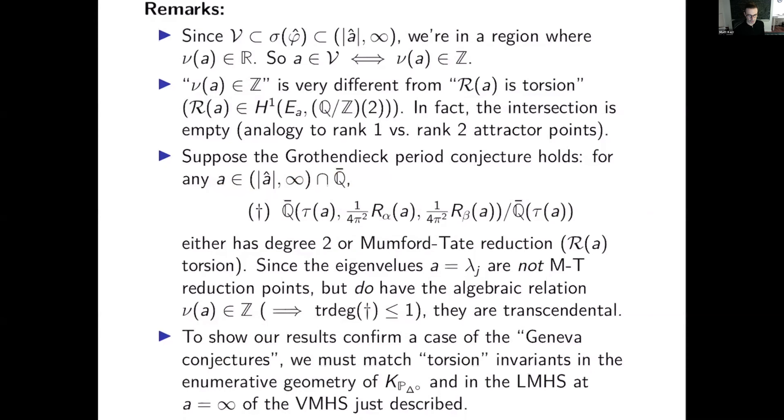Since the eigenvalues on the other hand a equals lambda j are not Mumford-Tate reduction points because this is different from this but do have an algebraic relation nu of a is integral making the transcendence degree of this less than or equal to one. That means that this cannot be true and the eigenvalues have to be transcendent. So if you believe the Grothendieck period conjecture these eigenvalues are interesting transcendental numbers. And finally to show that our results confirm a case of the Geneva conjectures we must match torsion invariance in the enumerative geometry of this local Calabi-Yau and in the limit mixed Hodge structure at a equals infinity of the variation of mixed Hodge structure I've been talking about. And that's a computation we do in our paper and you have to get that right. But I'm not going to say anything about it.